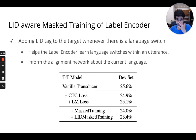Additionally, by adding language ID tags during the mask training process, we can improve our model further. We believe this helps the label encoder learn the language switches within an utterance and inform the alignment network about the current language being aligned.